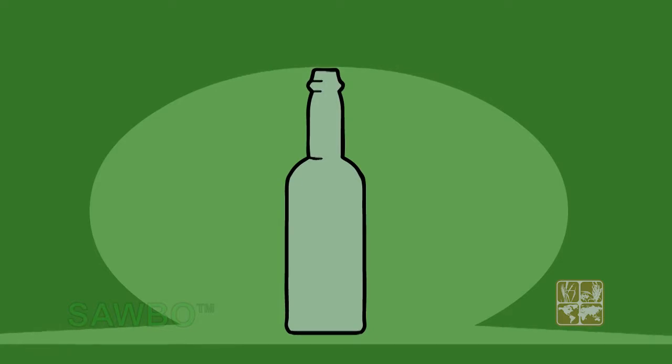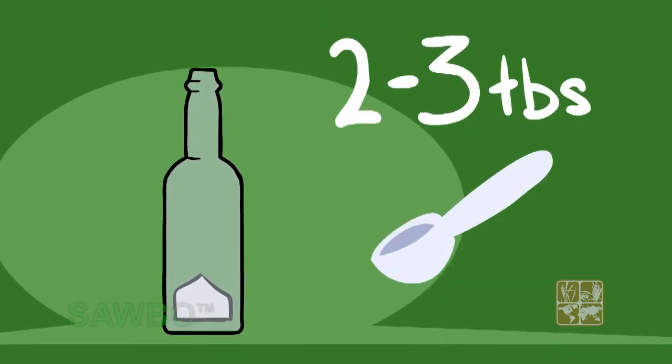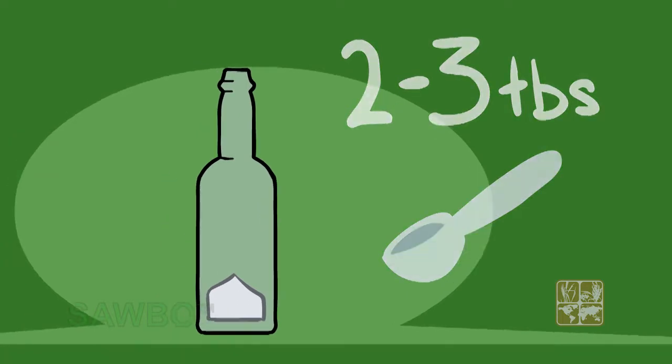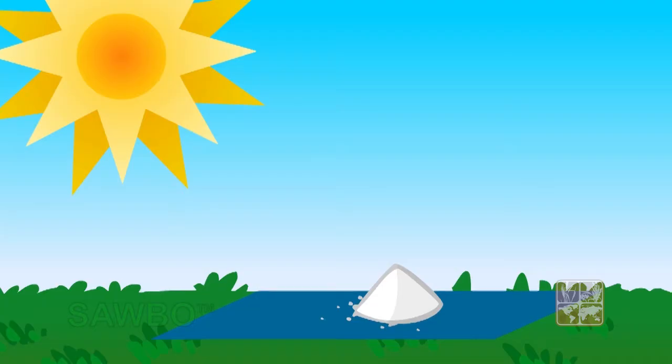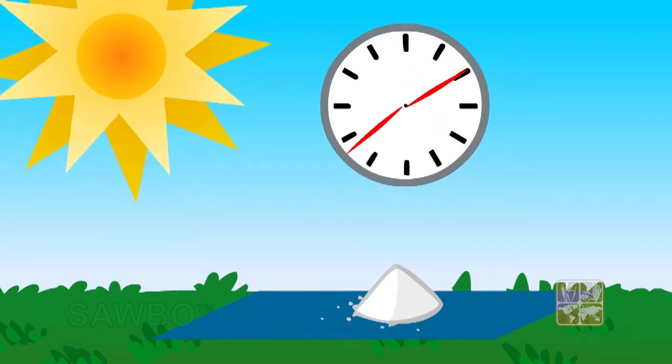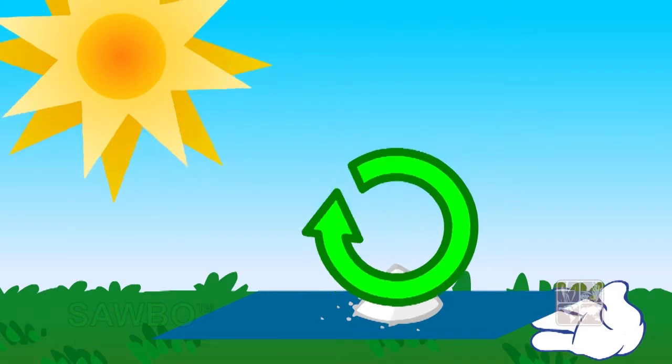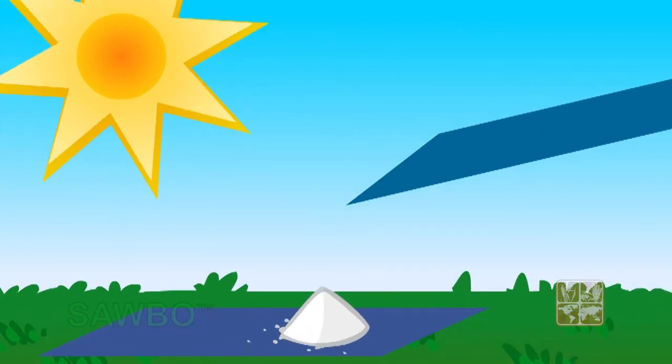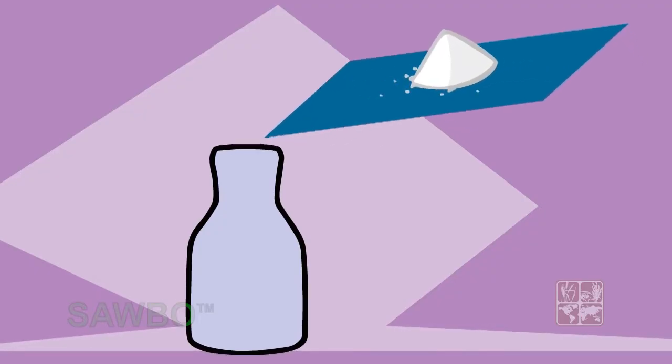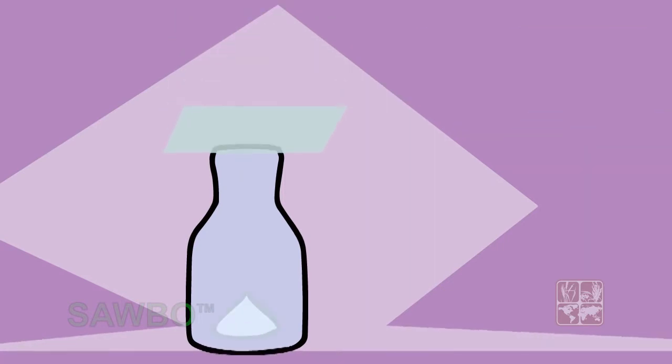You will also need two to three tablespoons, or 20 to 30 grams, of table salt. You will need to make sure the salt is dry. You can accomplish this by placing the salt on top of a sheet of plastic in the hot sun for three to four hours. Make sure you turn the salt during these three to four hours. The dried salt needs to be placed in a dry container that can be sealed.